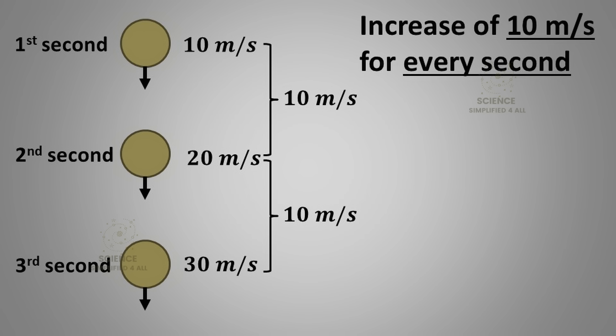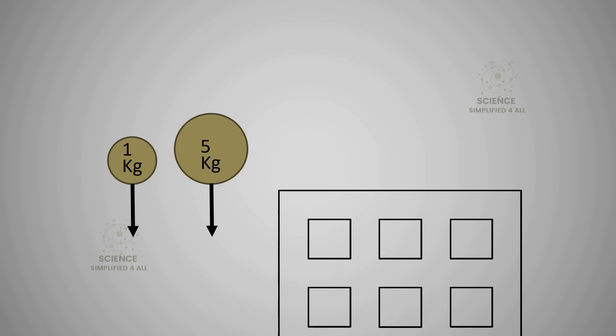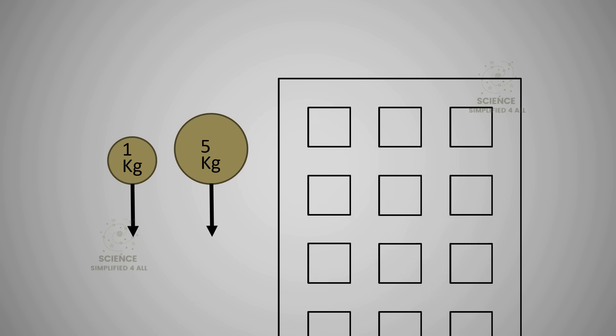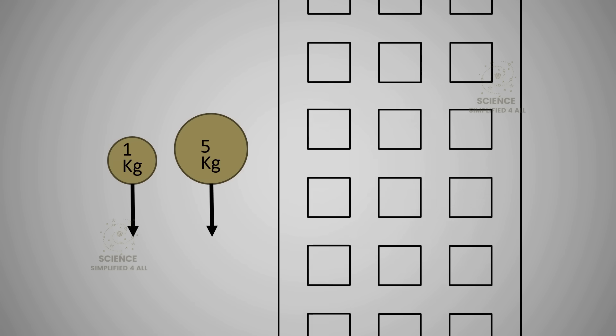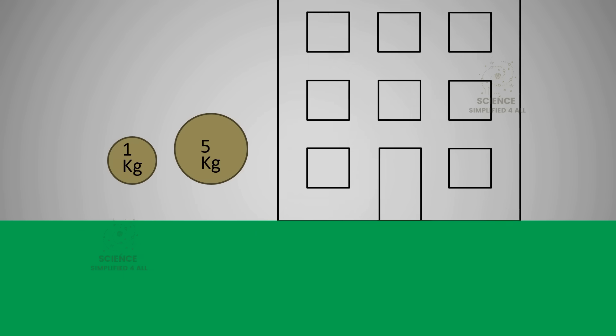And so on. That is, the object's speed changes by 10 meters per second every second. That is why the unit is written as meters per second per second, or simply meters per second squared. This acceleration is the same for all objects falling towards Earth. So if you drop a 1 kilogram iron ball and a 5 kilogram iron ball from the same height at the same time, they will fall at the same speed and reach the ground together.